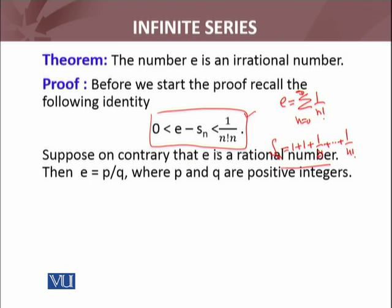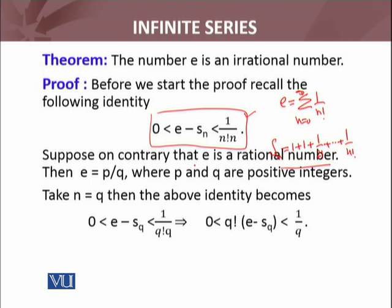Now if we take n equals q in the sequence of partial sums s_n, then the inequality becomes: putting q in place of n, s_q equals 1 + 1 + 1/2! + ... + 1/q!. Substituting n = q into the inequality gives: 0 ≤ e − s_q ≤ 1/(q! · q).